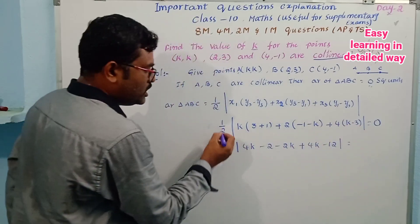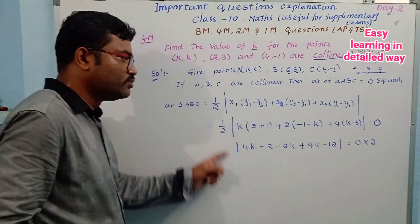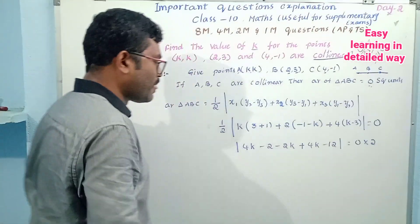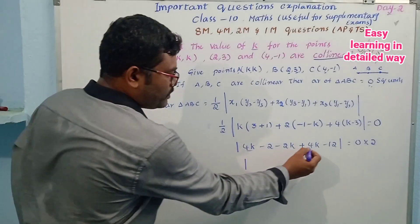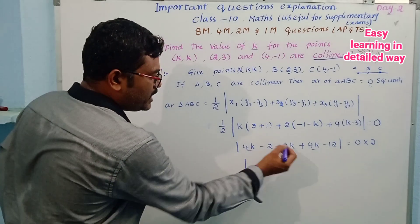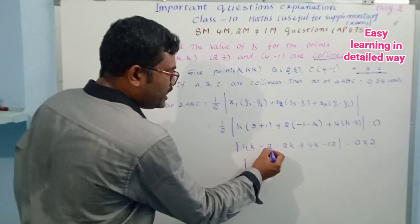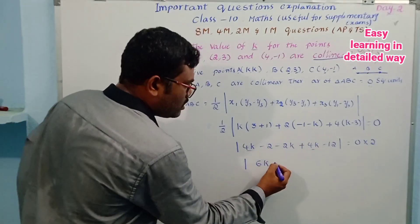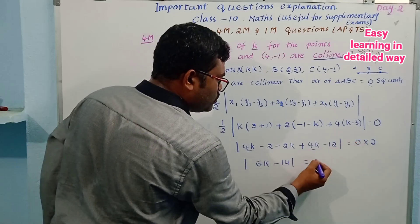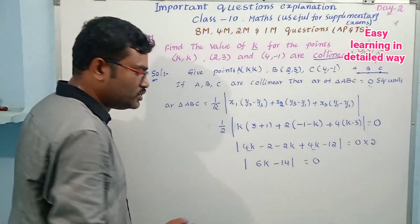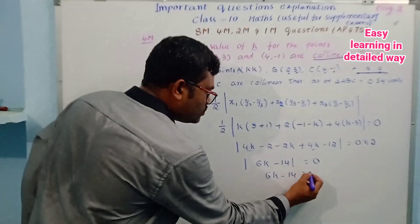Setting equal to zero: modulus of 4k plus 4k is 8k, minus 2k gives 6k, minus 2, minus 12 gives minus 14. So half the modulus of 6k minus 14 equals zero. Removing the modulus: 6k minus 14 equals zero, therefore 6k equals 14, so k equals 14 by 6, which simplifies to 7 by 3.